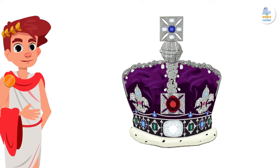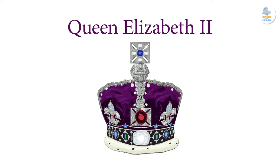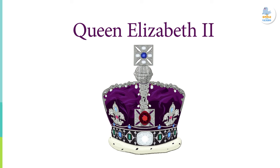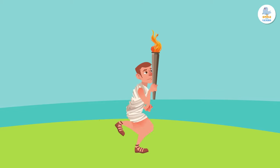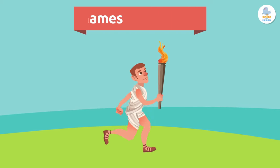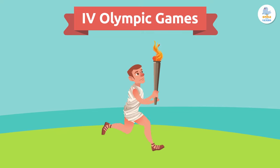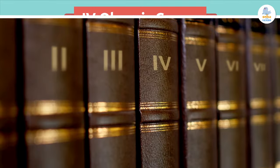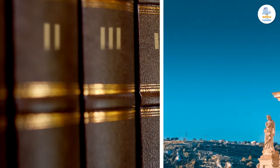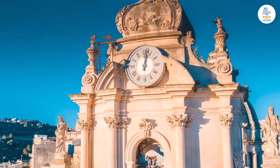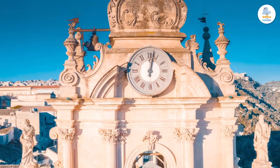We can see Roman numerals in the names of kings and queens, like Queen Elizabeth the Second. We can also see them in the names of sporting events like the Olympic Games or the Super Bowl. People also use them to number the volumes or parts of some books.